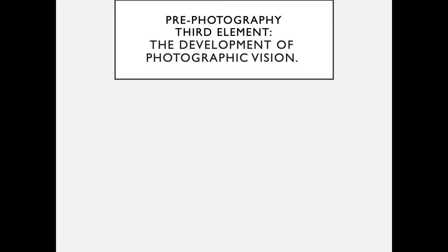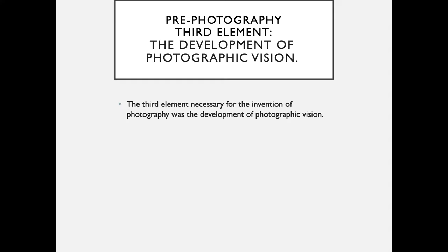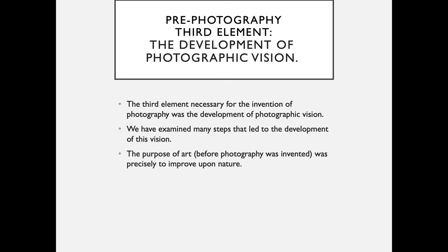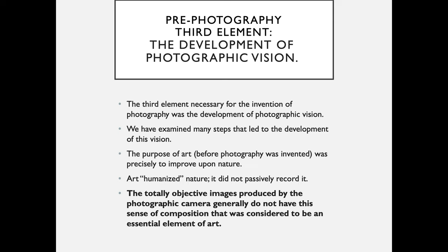The third element needed was the development of photographic vision. The third element necessary for the invention of photography was the development of photographic vision. The purpose of art before photography was invented was precisely to improve upon nature — art humanized nature; it did not just passively record it. The totally objective images produced by the photographic camera generally do not have this sense of composition that was considered to be an essential element of art.